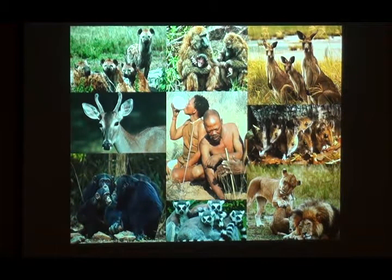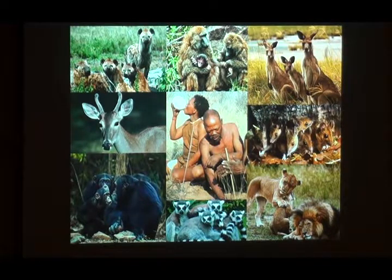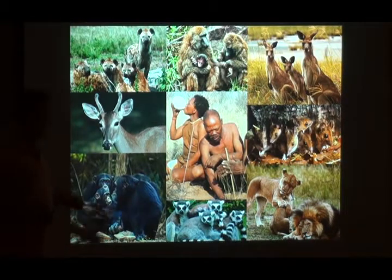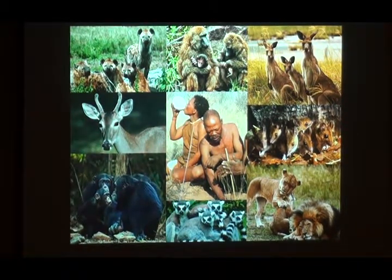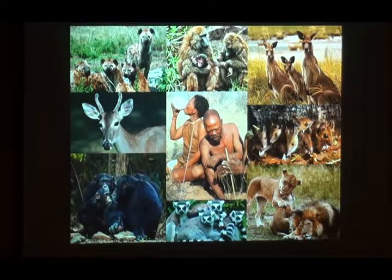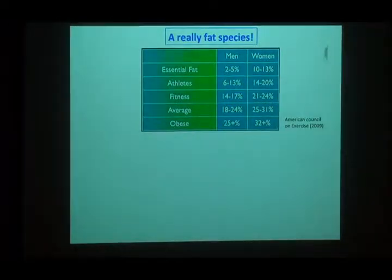Here's a group of animals. The people in the center happen to be Africans, because that's about the only place in the world where you find people living that primitively at this point. But if you went back five or ten thousand years, that's how we were all living. One of the most fundamental differences between us and other animals is that we are horrendously fat. We tend to think of ourselves as a fat species. This is data from the American Council on Exercise on how much body fat men or women have in what's considered obese, average, or essential.